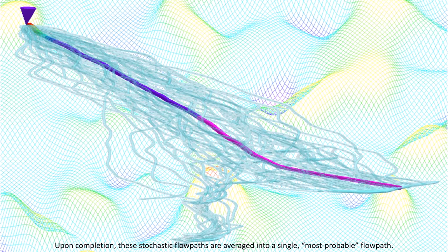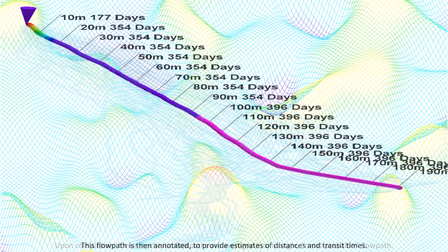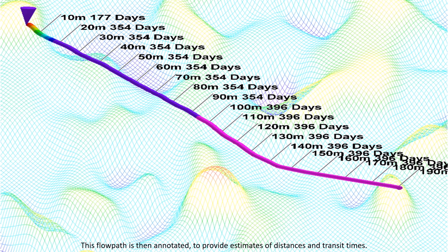Upon completion, these stochastic flow paths are averaged into a single most probable flow path. This flow path is then annotated to provide estimates of distances and transit times.